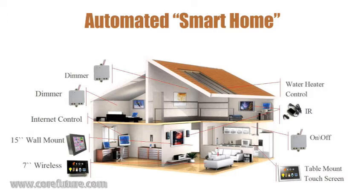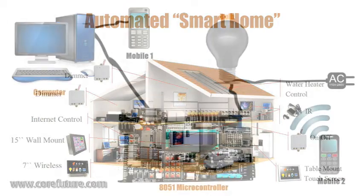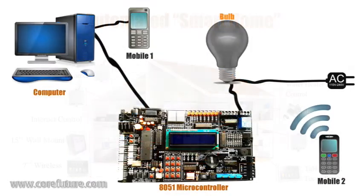We have set up a demonstration of a small home automation prototype in which we are controlling a light bulb through SMS. We have used two mobile phones, one software, and a piece of embedded hardware for this demonstration. Let's have a look.